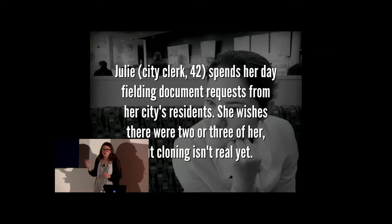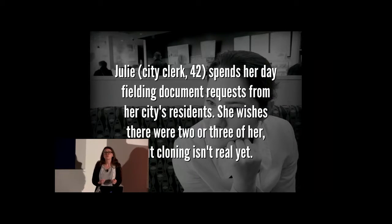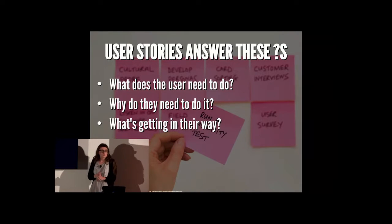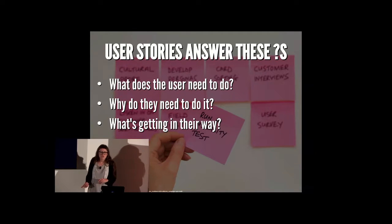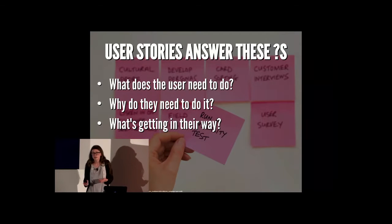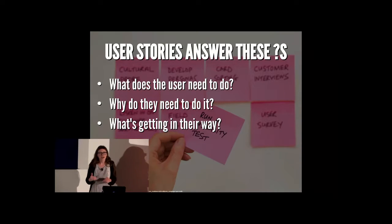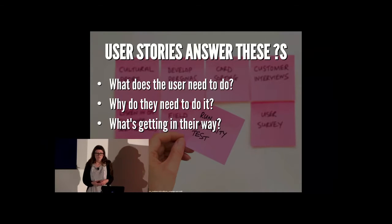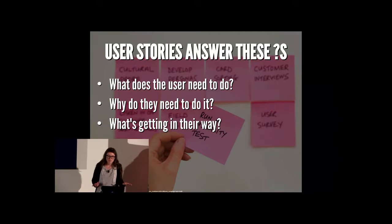Once we understand who our user is and what they need, we can start writing user stories that the whole team can work on. Your user story needs to answer these questions: What does the user need to do? Why do they need to do it? And what's getting in their way? Using our previous example, Julie needs to answer document requests from the general public. It's a legal requirement that these documents be available by request, so there's no getting around it. The limits in time and space are getting in Julie's way — there are just too many requests for her to handle in a single eight-hour shift.